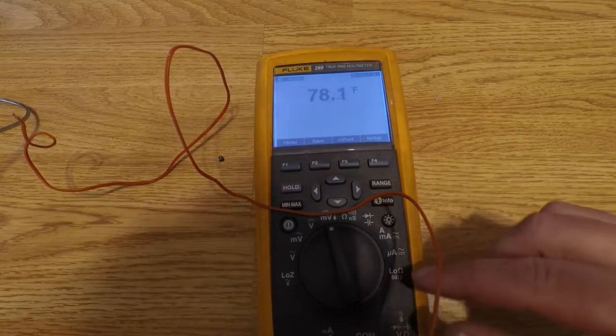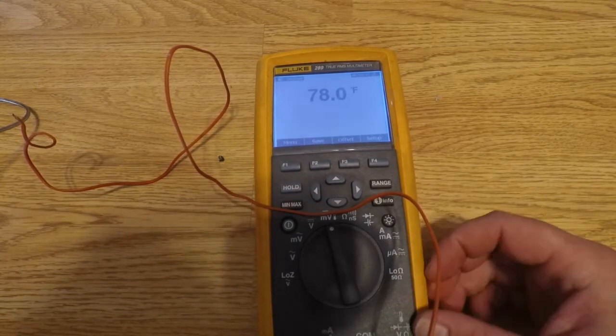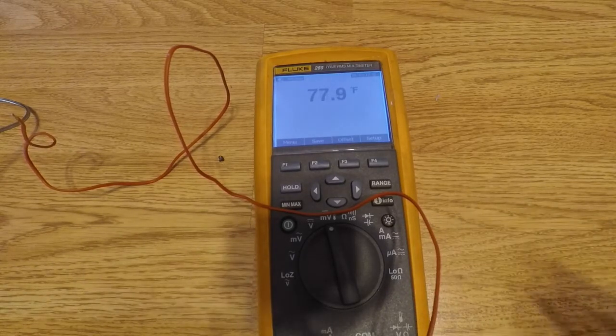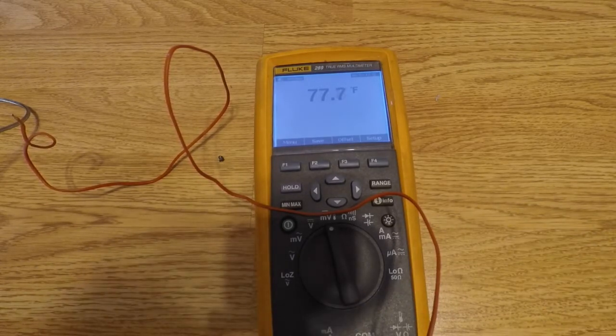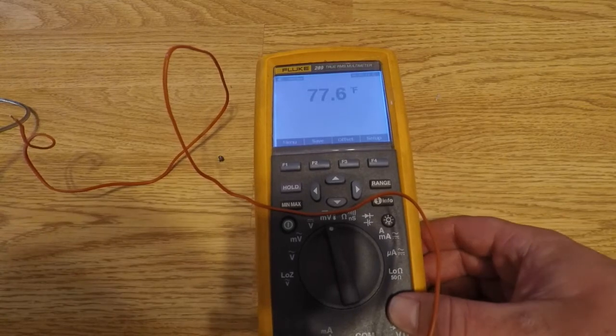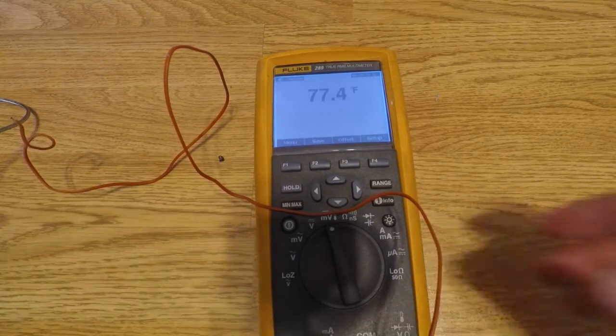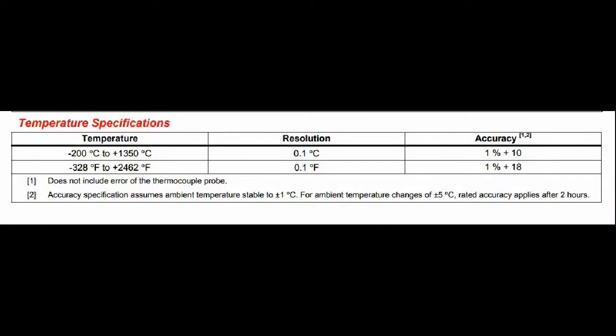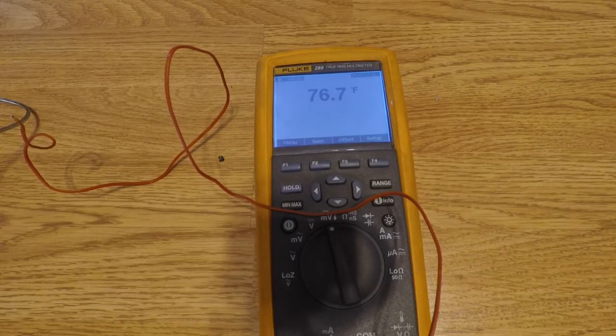Each one of these multimeters or anything that you're using that has a cold temperature junction reference, it has to have a stable temperature to base it off of. If you look at the specs on the Fluke, I'll clip them in here, it'll actually tell you how long the multimeter has to be at the same temperature and it will also tell you how much it can vary and still get that much accuracy.